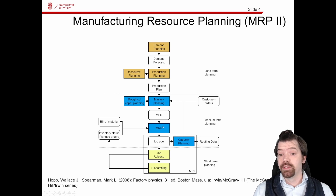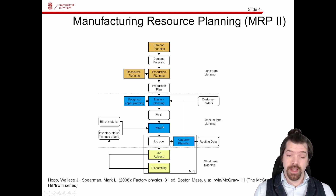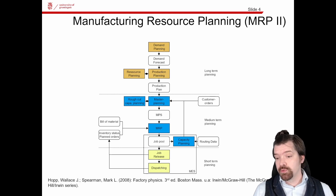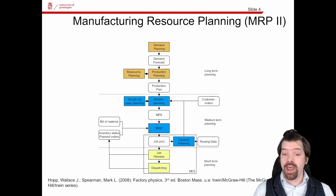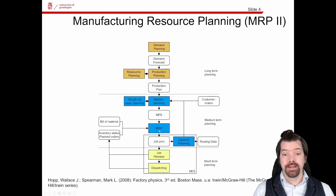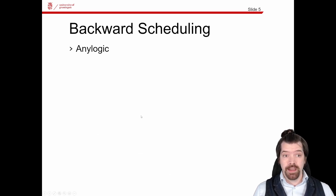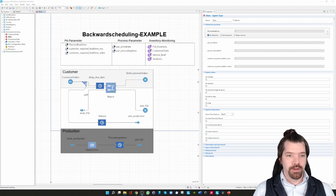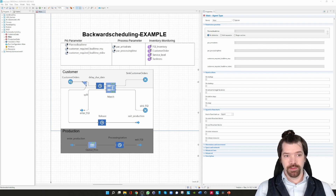This is an example where backward scheduling is used, but we can also see especially in small-sized companies that they do not have an MRP, so they just release the production orders based on customer orders by deducting a planned lead time. That leads me to the last slide: the implementation in AnyLogic.